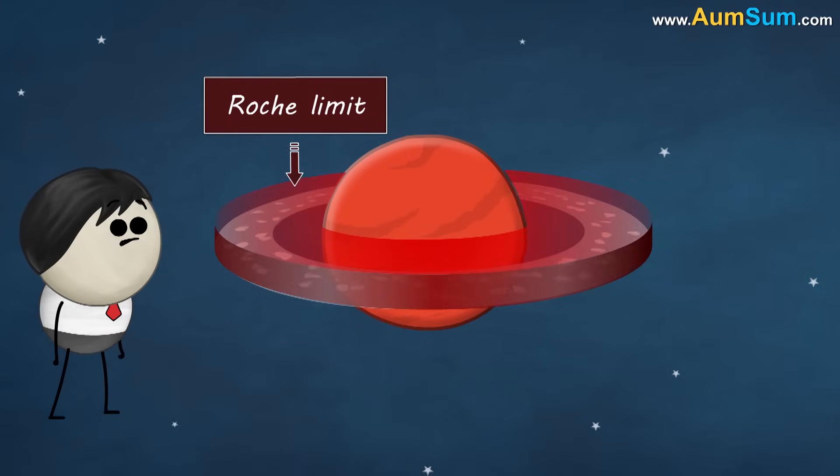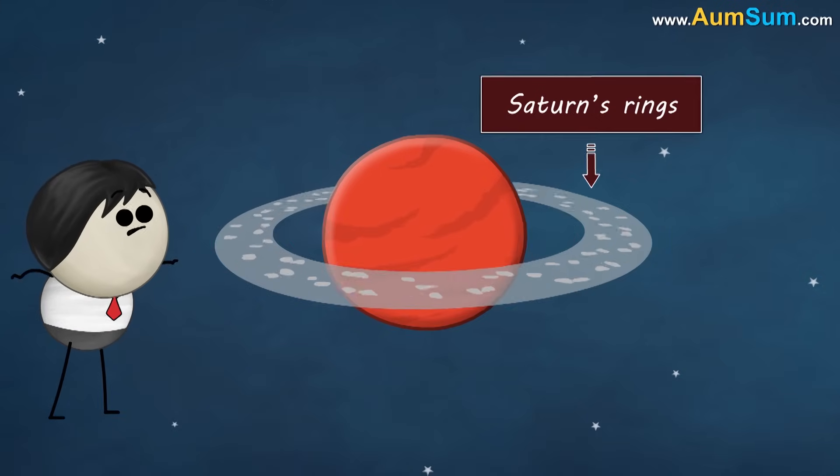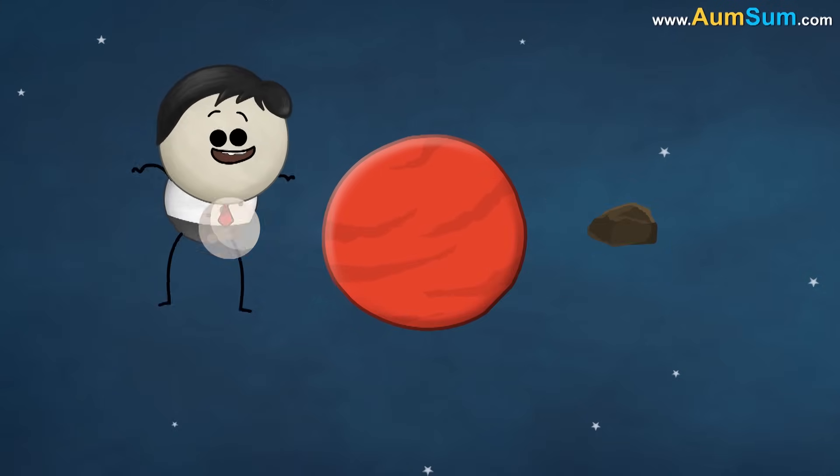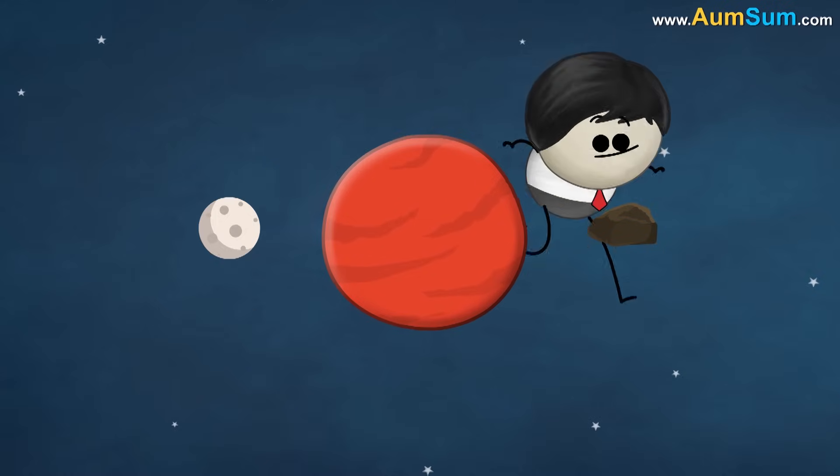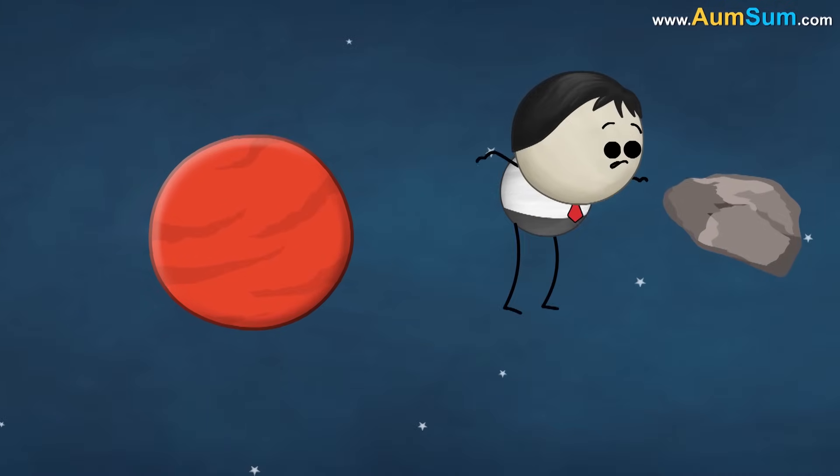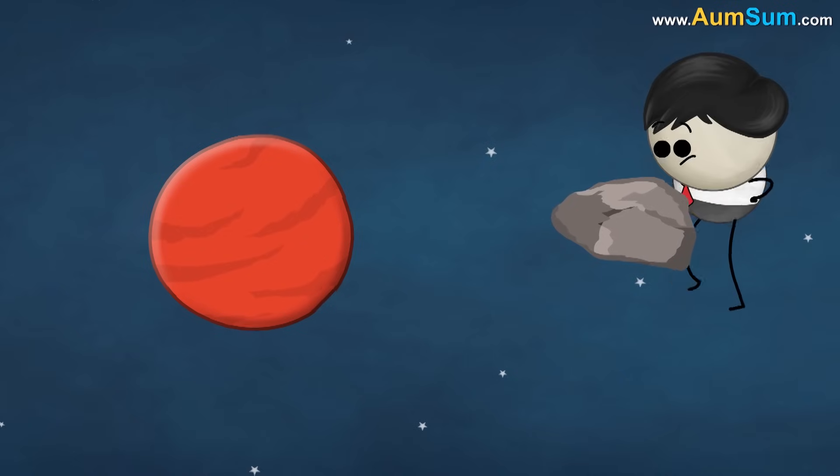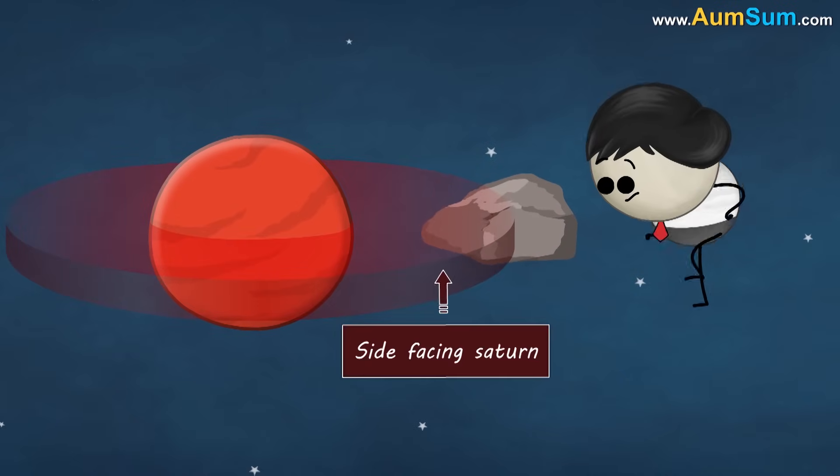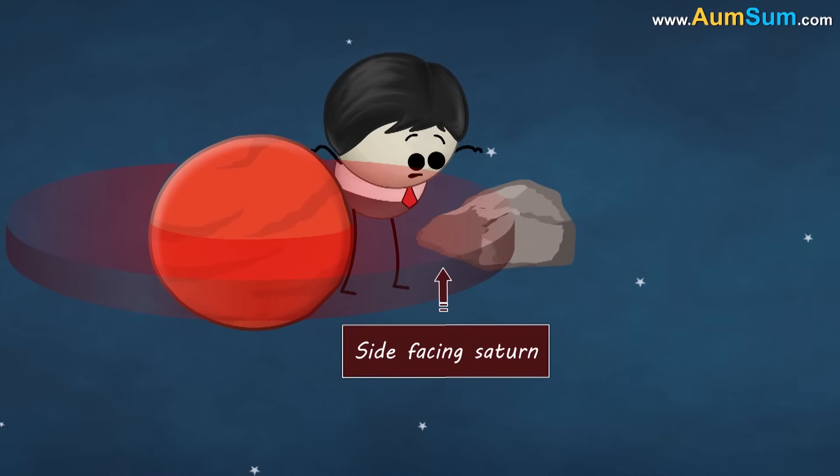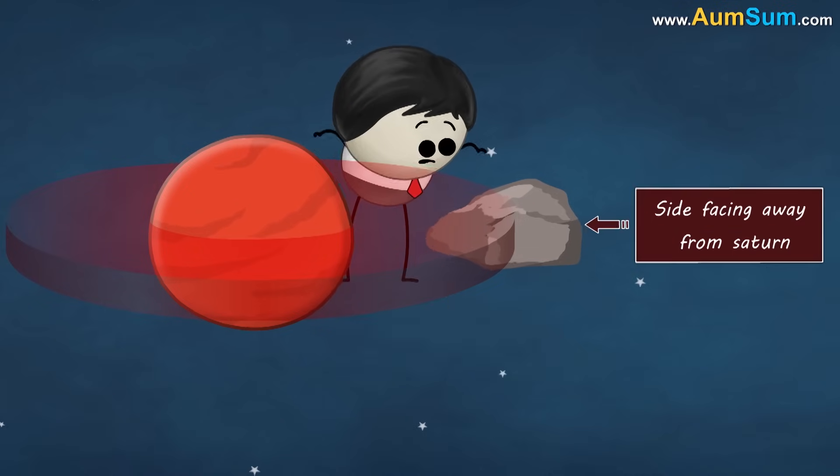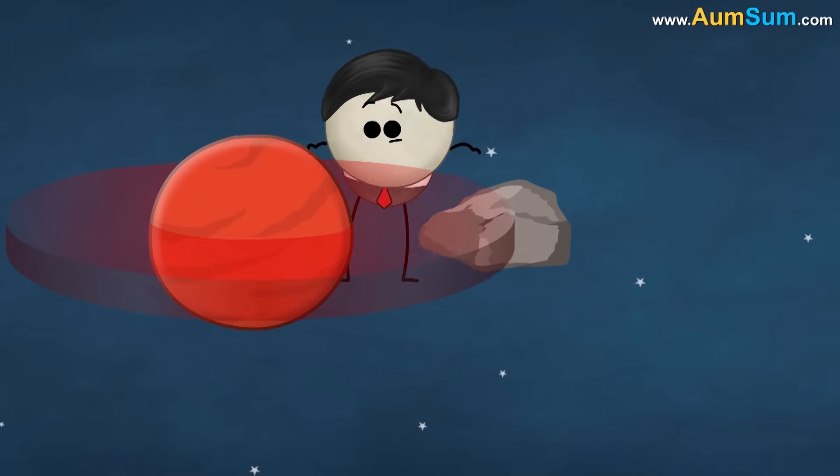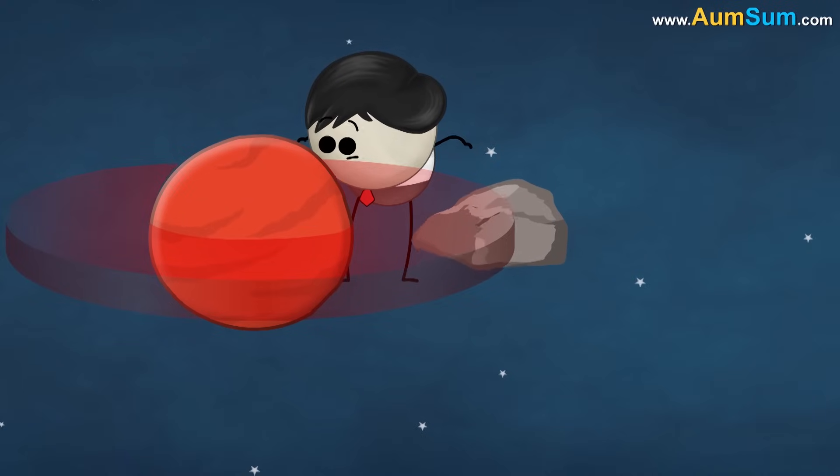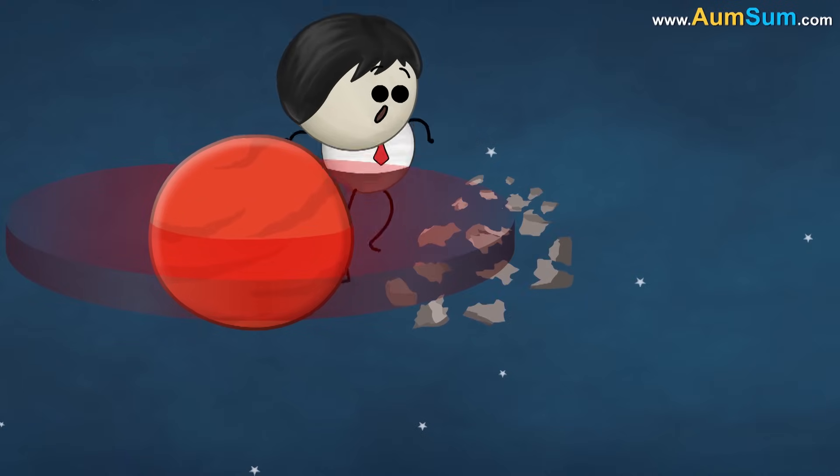Now, based on the Roche limit, one of the prevailing theories is that Saturn's rings are remnants of celestial bodies like a moon or a comet. Billions of years ago, a celestial body may have got too close to Saturn exceeding the Roche limit. Hence, its side facing Saturn was pulled more strongly as compared to the side facing away. So, this inconsistent gravitational pull may have ripped apart the celestial body into pieces.